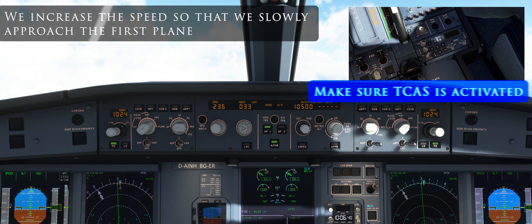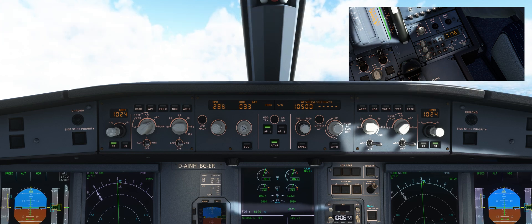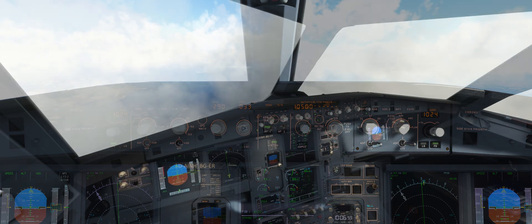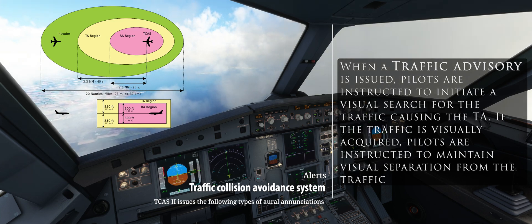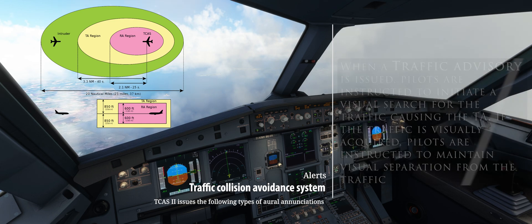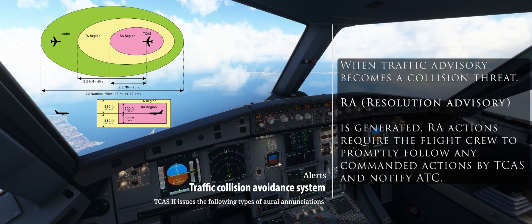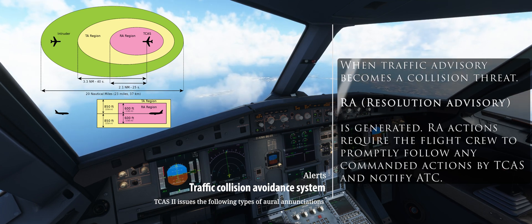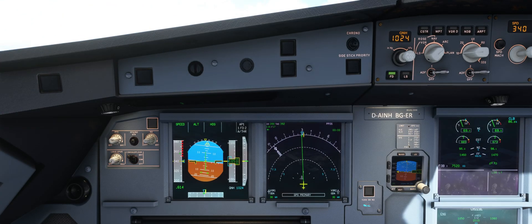We increase speed to slowly approach the first plane. The traffic collision avoidance system has two automatic modes. The first mode is TA — Traffic Advisory. When a TA is issued, pilots are instructed to initiate a visual search for the traffic causing the TA. If the traffic is visually acquired, pilots maintain visual separation. When a traffic advisory becomes a collision threat, an RA — Resolution Advisory — is generated. RA actions require the flight crew to promptly follow any commanded actions by TCAS and notify ATC.